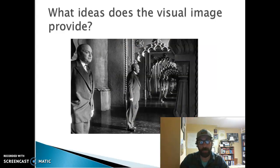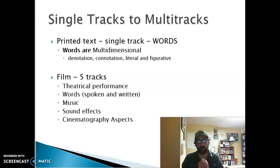Words are multi-dimensional. They have denotation, connotation, it can be literal, it can be figurative, but film works on five different tracks. We have the acting performances, the words that are spoken or written, the music, the sound effects, and then cinematography aspects, things that we've been looking at throughout the semester. Those are some things to think about, the differences between the written word and film.